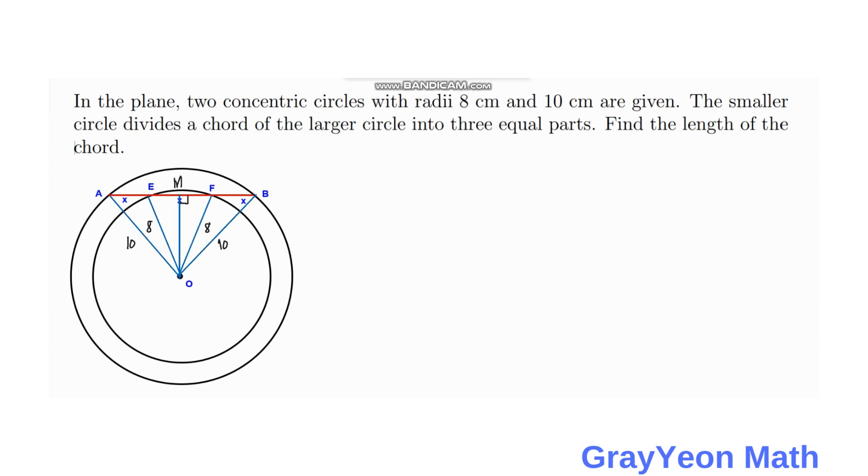It is given that the chord is divided by the smaller circle into three equal parts. That is why we label these segments AE, EF, and FB as x.